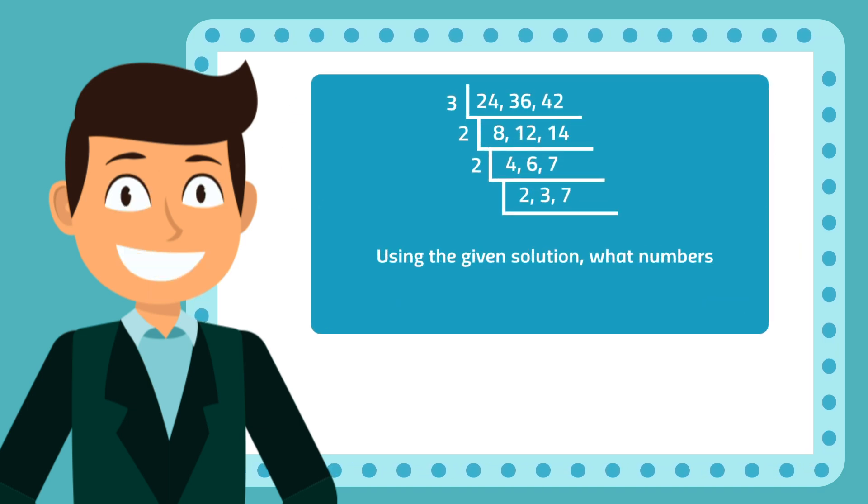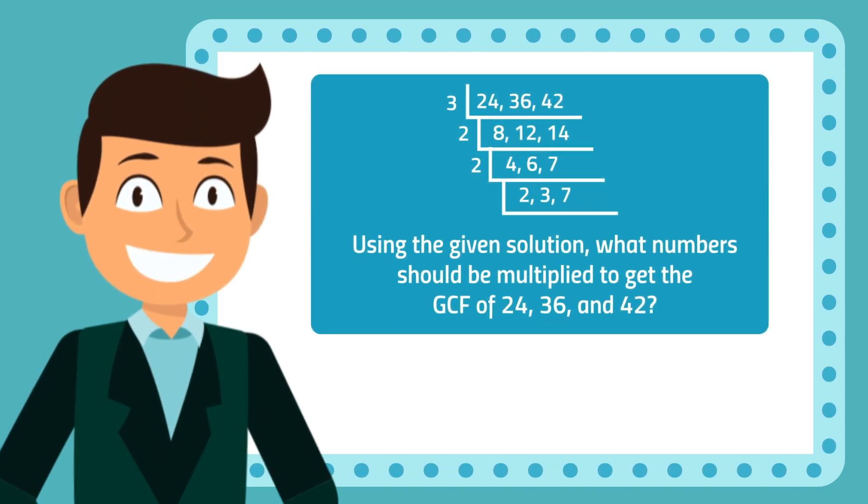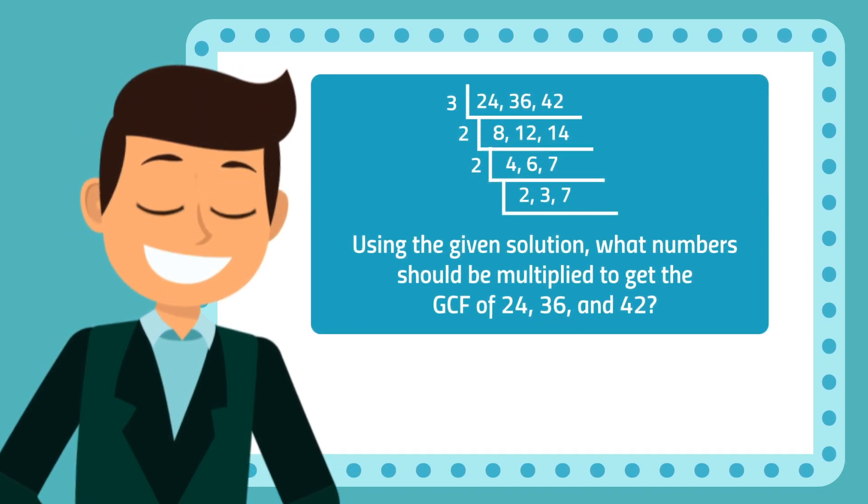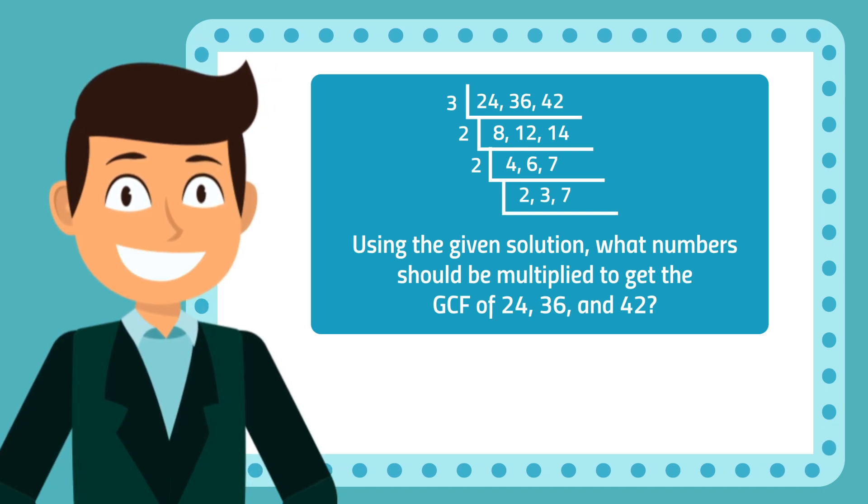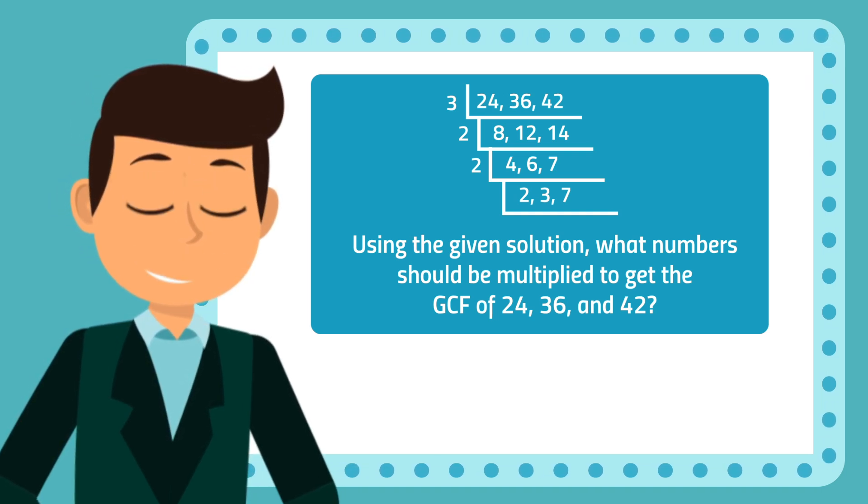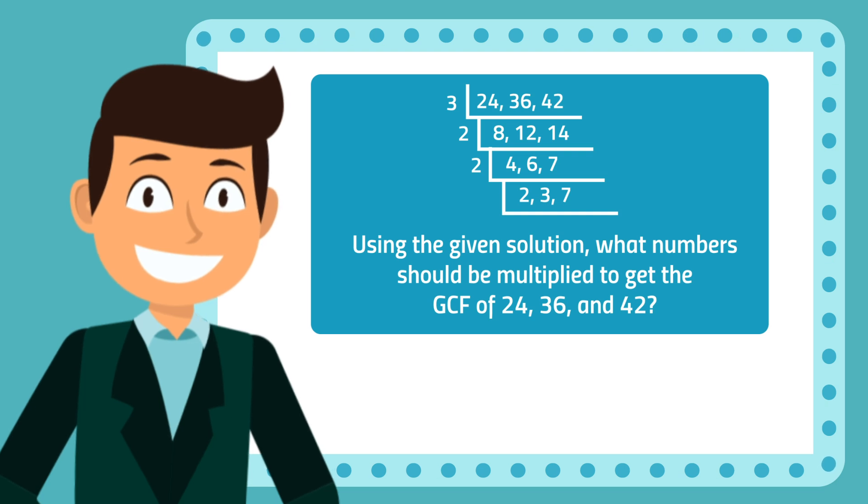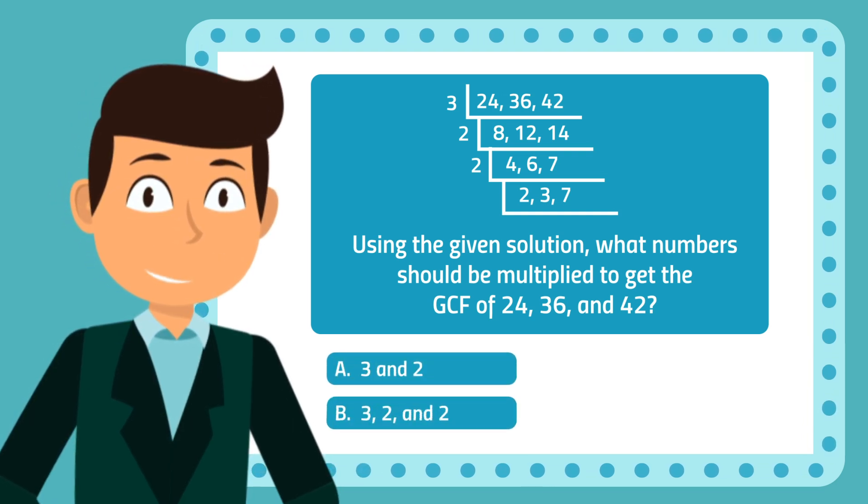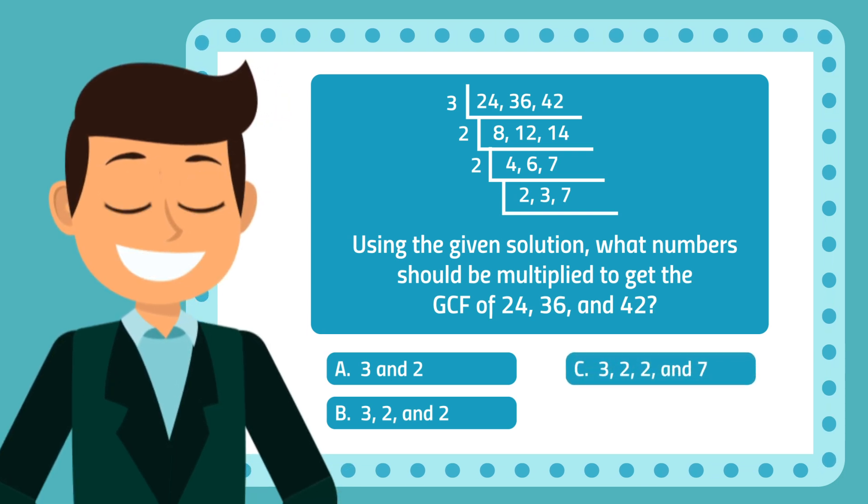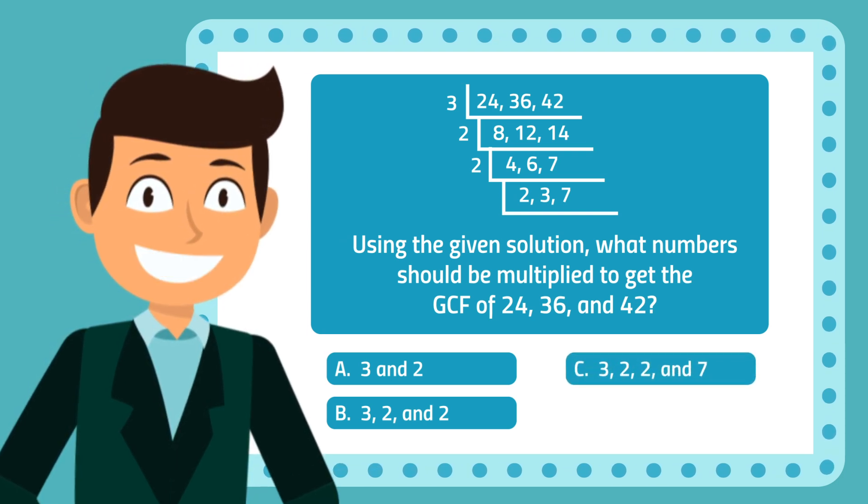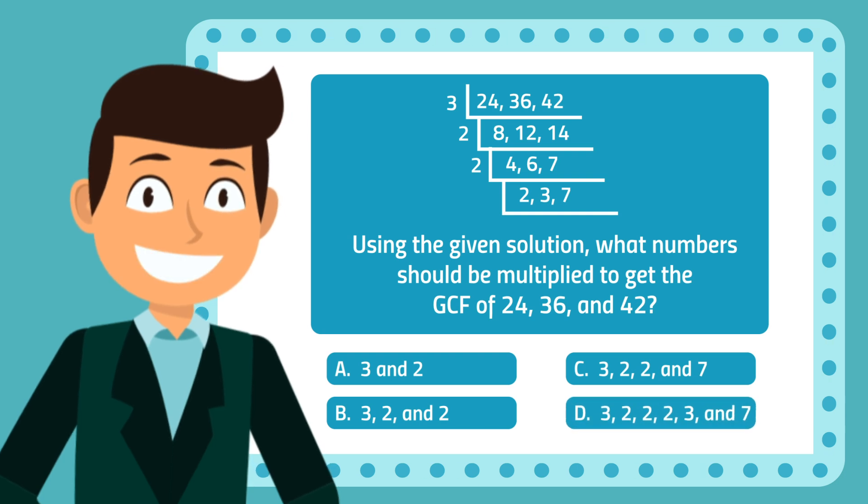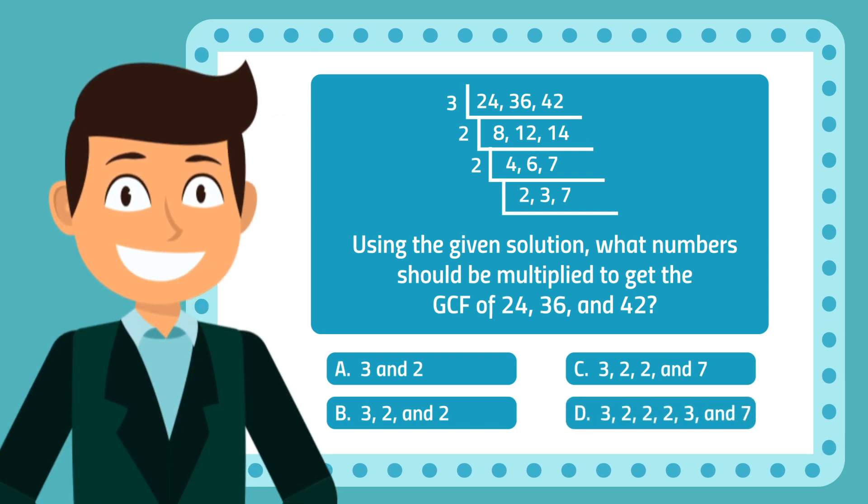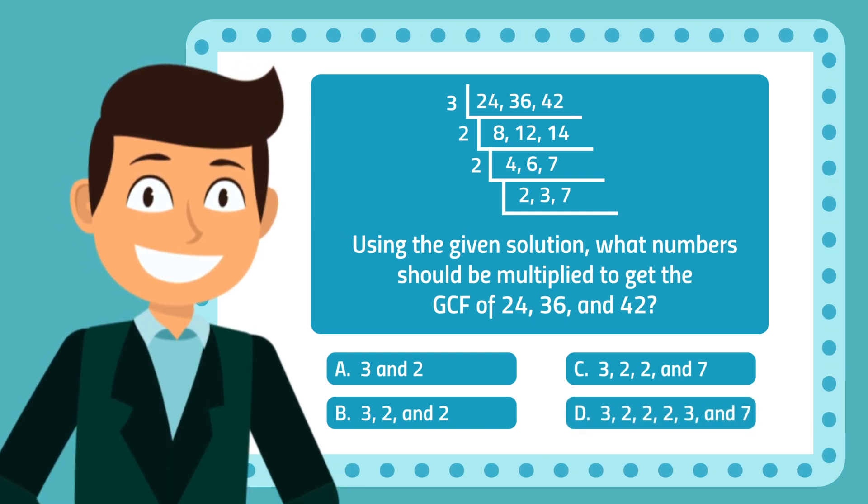For our final question, using the given solution, what numbers should be multiplied to get the GCF of 24, 36, and 42? A. 3 and 2 B. 3, 2, and 2 C. 3, 2, 2, and 7 Or D. 3, 2, 2, 2, 2, 3, and 7